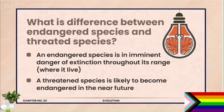Question number 9: What is the difference between endangered species and threatened species? Threatened species woh hoti hai jinko khatra hota hai ki wo endangered na ban jaaye, aur endangered species woh hoti hai jinko khatra hota hai ki wo extinct ban jaaye. An endangered species is in imminent danger of extinction throughout its range. A threatened species is likely to become endangered in the near future. Examples of both can also be mentioned.